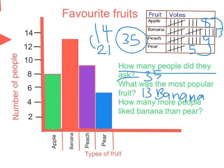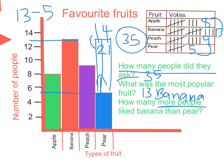Here's the question that got a few of you confused in class: how many more people liked banana than pear? Pear had five people and banana had thirteen. To find the difference, you do thirteen take away five. You could use counting back or other strategies, and you'll find the answer is eight.